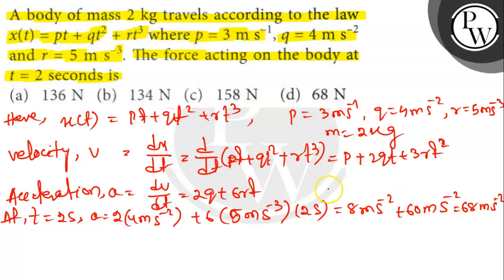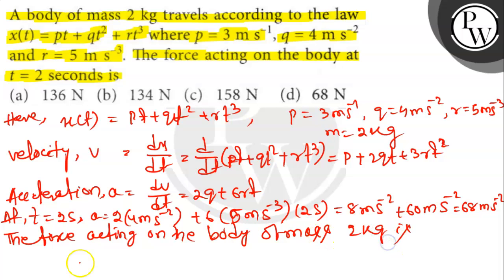The force acting on the body: F = ma = 2 kg × 68 m/s² = 136 N. Option A is the correct answer. Thank you.